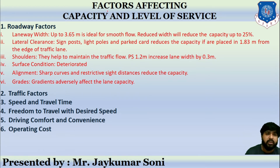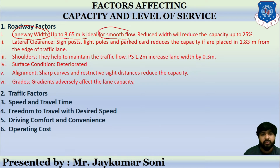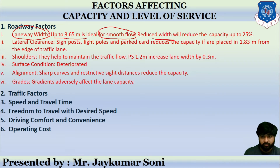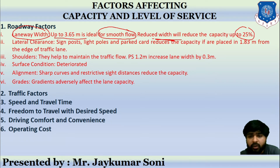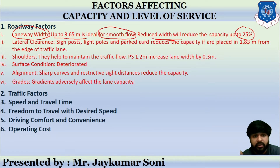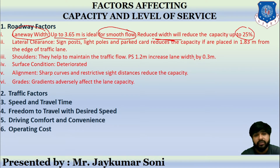The first roadway factor is lane width. If lane width is up to 3.65 meters, it is ideal for smooth traffic flow. However, if lane width is reduced below 3.65 meters, it will reduce capacity by up to 25 percent.